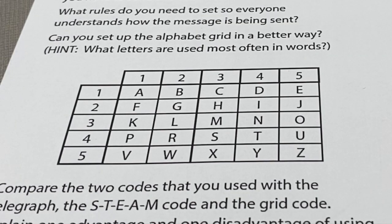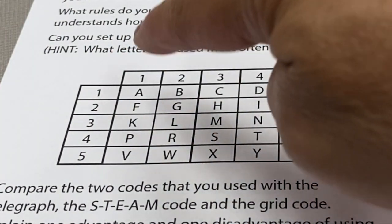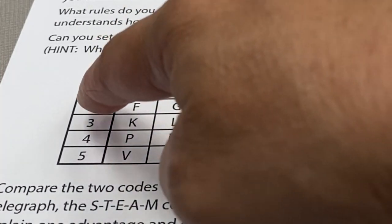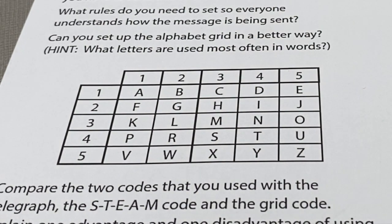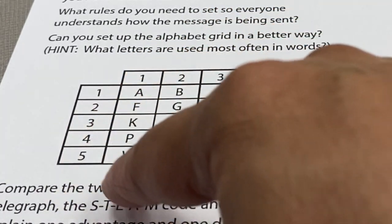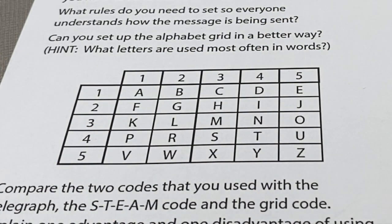For the grid code, you would use two sets of clicks for each letter. So one click and one click would be A, one click and two clicks would be B, one click with three clicks would be C, one click with four clicks would be D, and so on. So imagine if you needed to communicate a Z — you would need five clicks and then five more clicks in order to communicate Z.